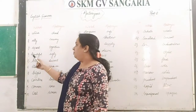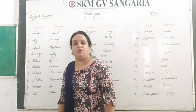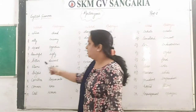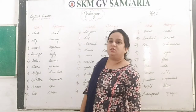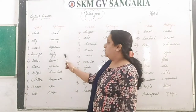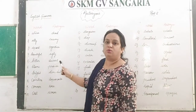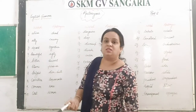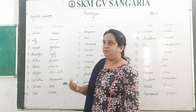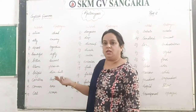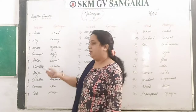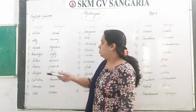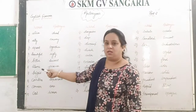Next is 'beautiful,' B-E-A-U-T-I-F-U-L, and the opposite word is 'ugly,' U-G-L-Y. Next is 'bitter,' B-I-T-T-E-R, and the opposite word is 'sweet,' S-W-E-E-T. Like medicines are bitter in taste, and many things are bitter — for example, bases are bitter in taste.